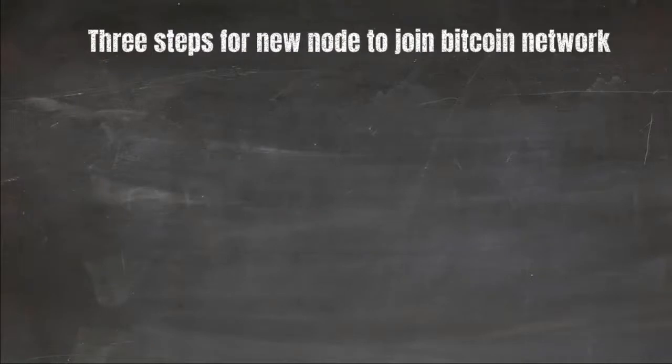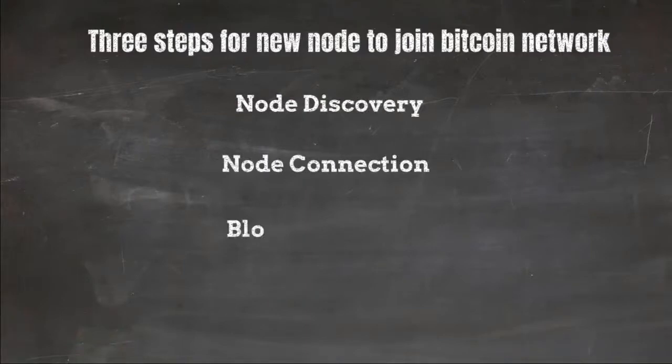There are three steps involved before a node can start feeling at home in Bitcoin network. First step is node discovery. Second step is node connection and third step is block download.